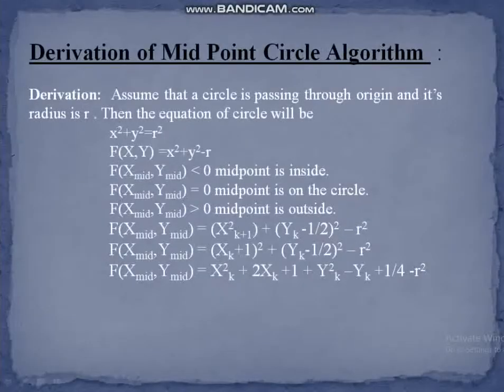Now, the derivation of the midpoint circle drawing algorithm. Assume that the circle is centered at the origin and its radius is r. Then the equation of the circle is x² + y² = r². By substituting the coordinates of the midpoint into the equation: if the result is less than 0, the midpoint is inside the circle; if the result equals 0, the midpoint is on the circle.